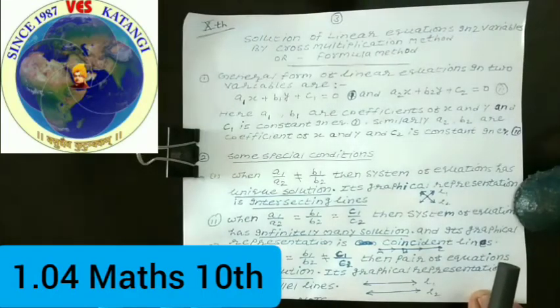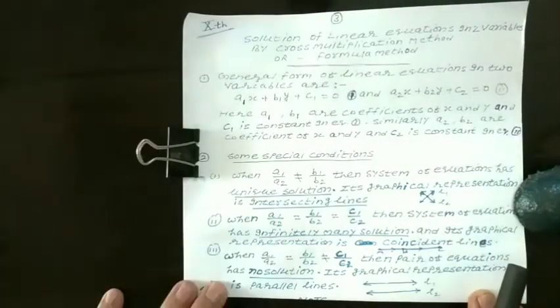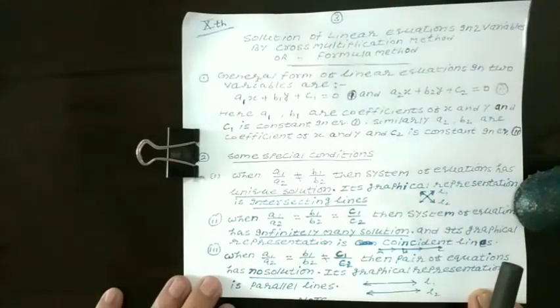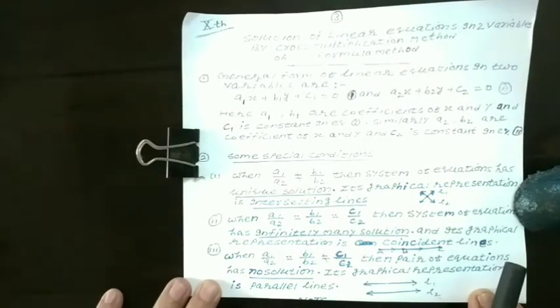The solution of linear equations in two variables by cross multiplication method or formula method. In the previous lecture, we solved these types of equations by substitution and elimination. Now third is the formula method or cross multiplication method.